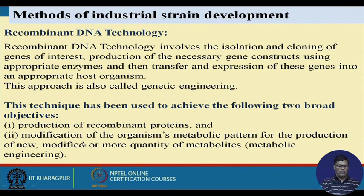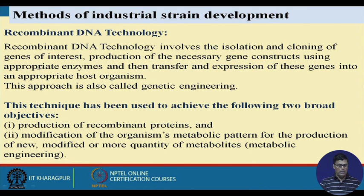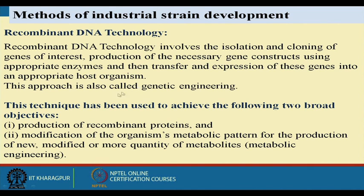Recombination can be based on sexual reproduction, parasexual cycles, and protoplast fusion. Recombinant DNA technology involves the isolation and cloning of the gene of interest, production of the necessary gene construct using appropriate enzymes, and transfer and expression of that gene into an appropriate host organism. This innovative technology achieves desired characteristics in microorganisms, known as genetic improvement of microbial strains.